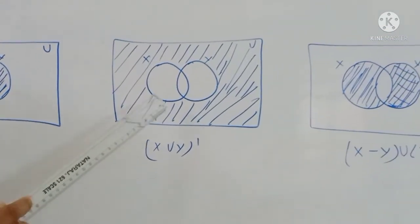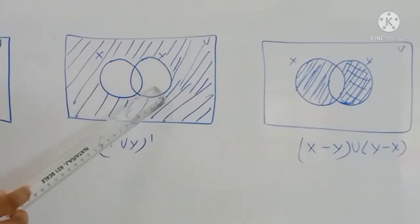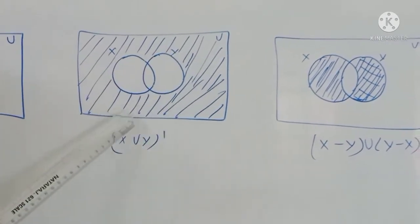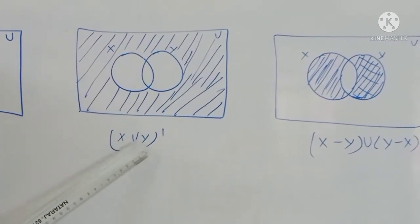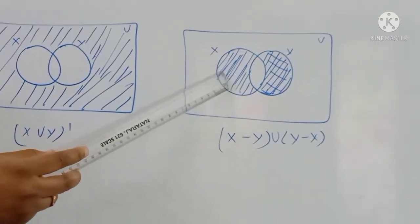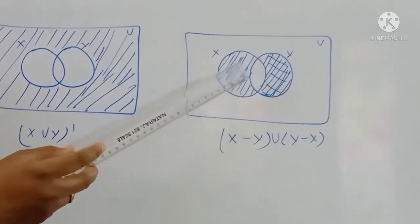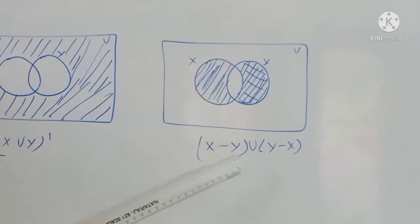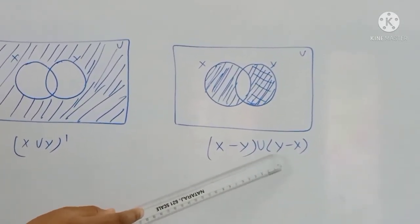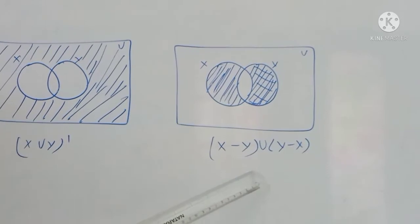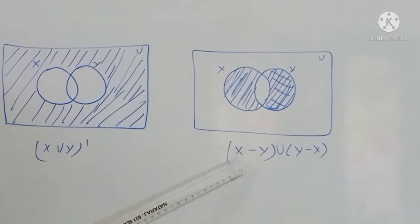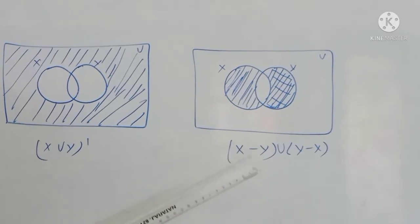In the next diagram, X union Y is shaded. The symmetric difference X delta Y equals X minus Y union Y minus X. This is the book answer and the formula for symmetric difference.